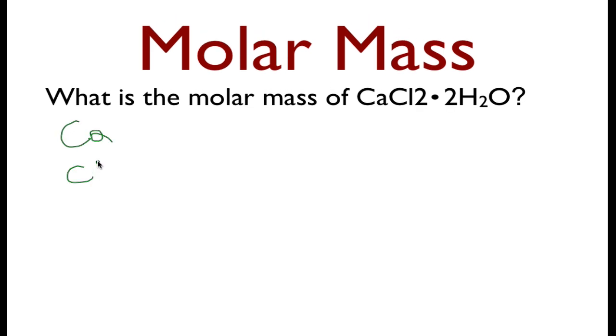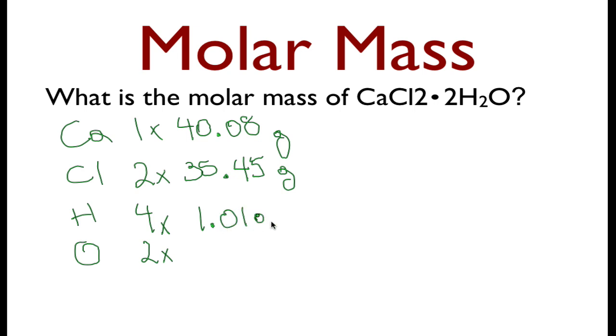We have some calcium, we have some chlorine, we have some hydrogen, and we have some oxygen. How many of each? One. Two. We have two waters. Each water has two hydrogens, so we have four. We have two waters. Each water has one oxygen, so we have two oxygens. Then we can write down the molar masses. The molar mass of calcium is 40.08 grams, chlorine is 35.45 grams, hydrogen is still 1.01 grams, and oxygen is still 16.00 grams.